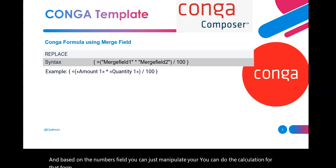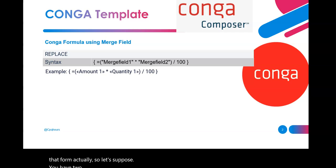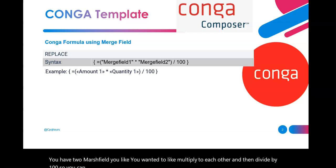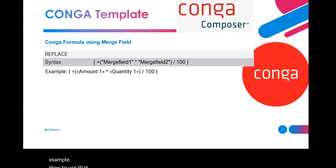So, let's suppose you have two merge fields and you want to multiply them by each other and then divide by 100. You can see the syntax for amount multiplied by quantity divided by 100. It is just an example of how to use that formula in a Kanga template.